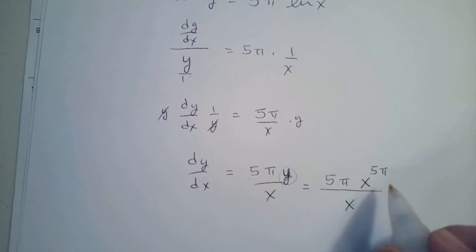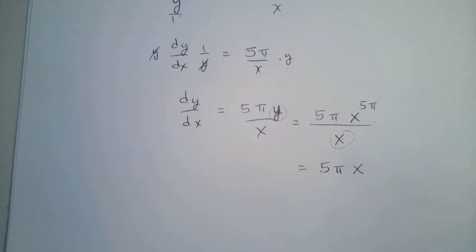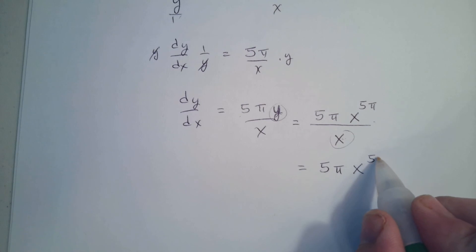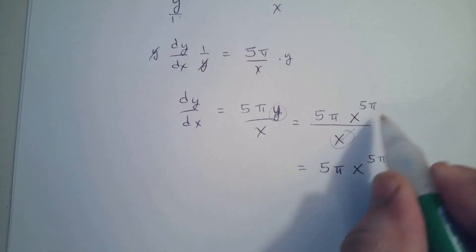So whenever you divide by it, I can bring this one up. x to the power of 5π minus 1, because I'm subtracting 1 from the list.